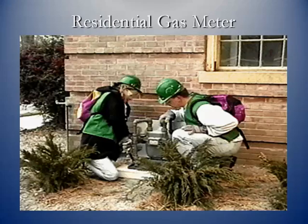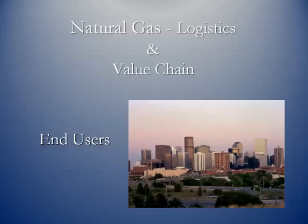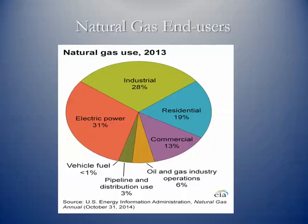Here's just a typical residential meter, and here we have a large metropolitan area — this happens to be Denver. Electric power is the largest end user for natural gas at 31%, followed by industrials and then residentials, with commercials having a very small percentage as well. And one thing to notice: vehicle fuel, as of 2013, was less than 1% of the consumption of natural gas in the US.